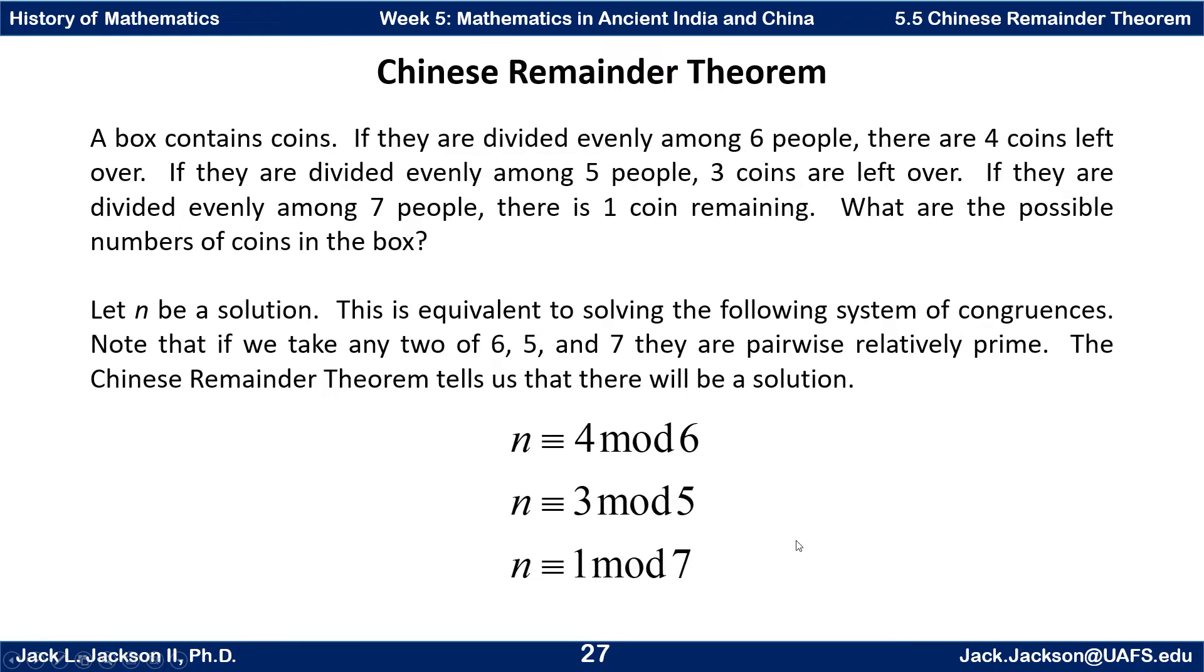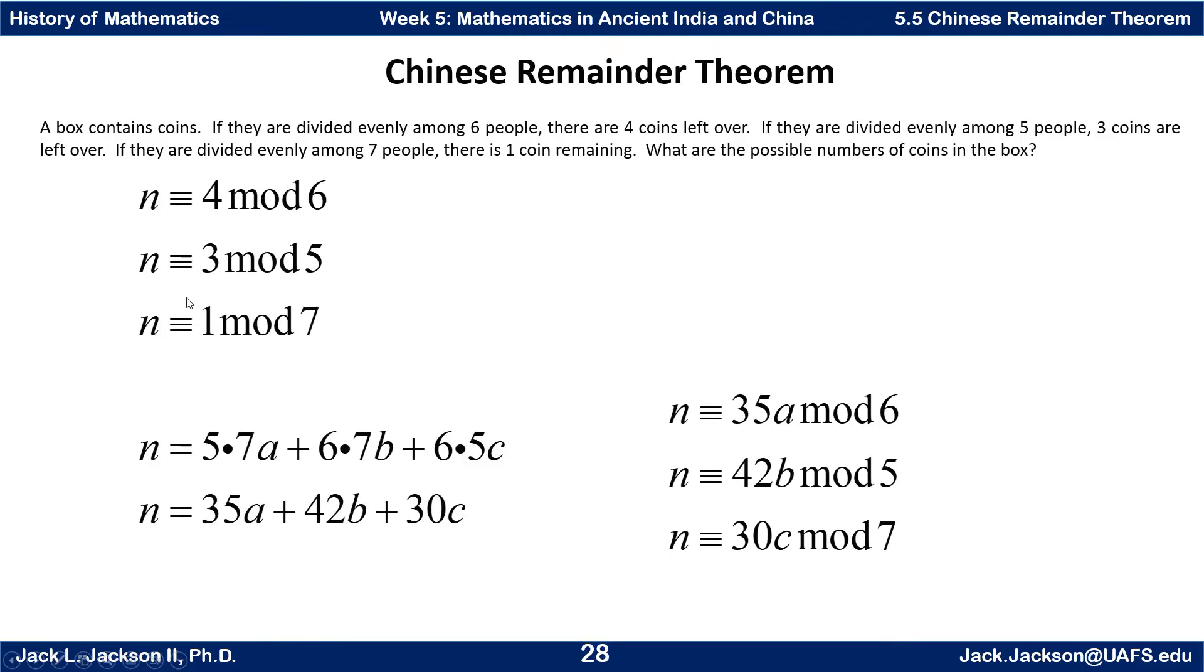So we're going to do some modular arithmetic here. We're going to be working in the integers mod 6, the integers mod 5, and the integers mod 7. I don't know that the Chinese folks of that time used that terminology, most likely not, but they would have done something equivalent to this. Here's basically the way I'm going to approach this. I'm going to break this n into the sum of three pieces.